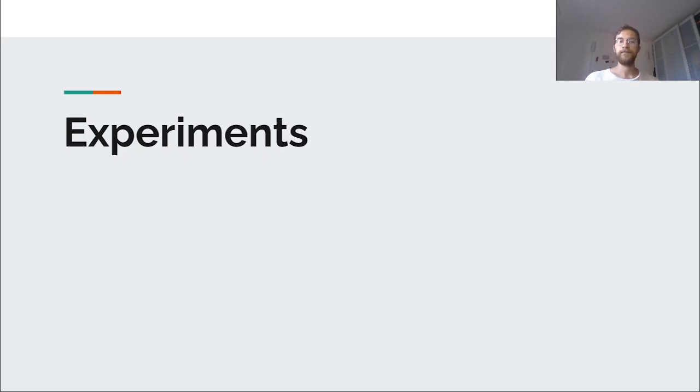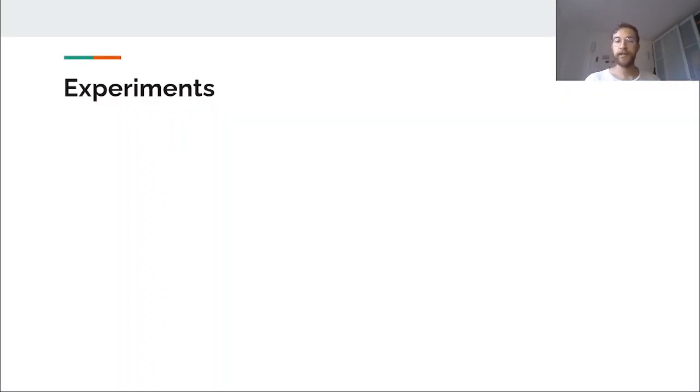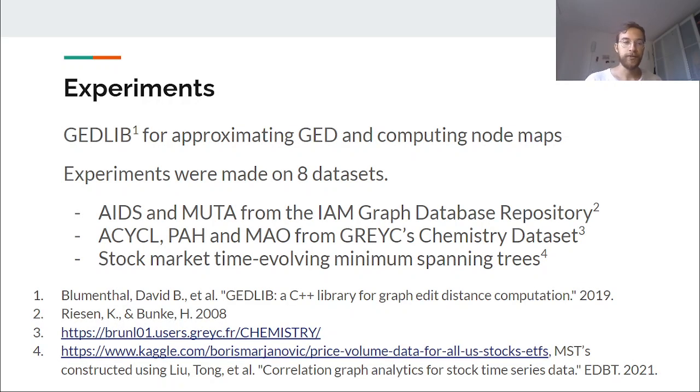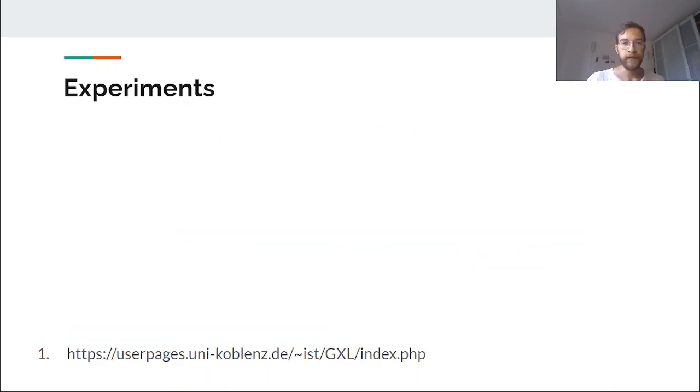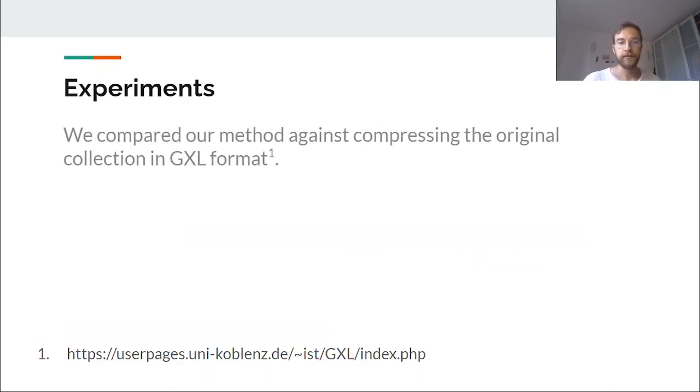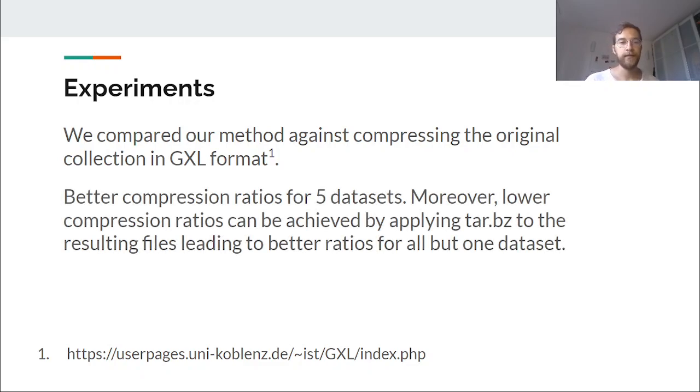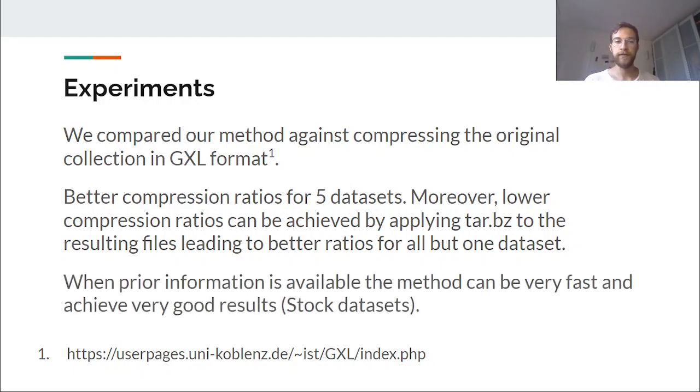Now that we explained the method, let's give a look at the experiments. We used eight graph collections, five of them related to molecules and other three related to stock market correlation trees. We used the GEDlib, which is a very nice C++ library with a lot of GED heuristics. And we compared our method against a traditional, very well known compression method, which is TARBZ. Our baseline or our reference point was compressing the original graph collection, which were stored in GXL format. And as the main results, we can list that the method itself works very well for five datasets. And we discovered that adding an additional layer of TARBZ gives you better results.